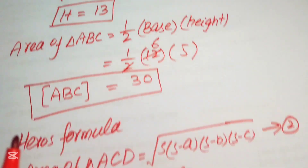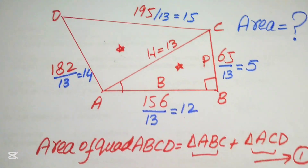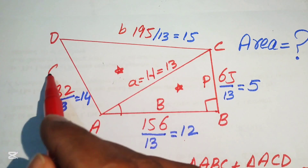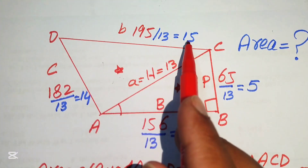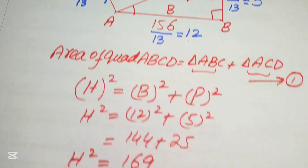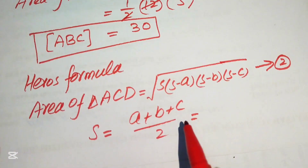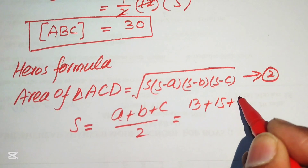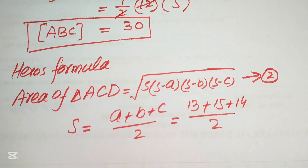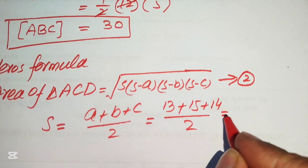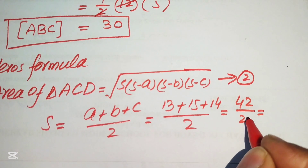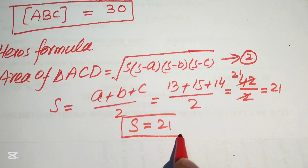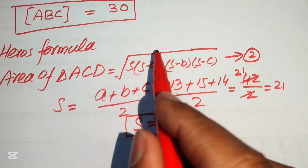In triangle ACD, we label the sides: a = 13, b = 15, and c = 14. Substituting into the semi-perimeter formula: s = (13 + 15 + 14) / 2 = 42 / 2 = 21. So the value of s is 21.